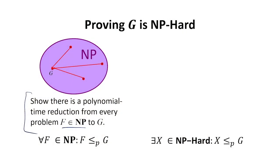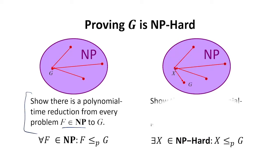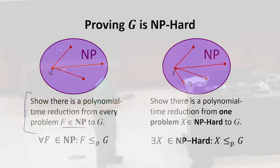The other way to do it is, well now, once we know some problem that's NP-hard, we only have to show one reduction. We have to show that this problem that we're trying to show is NP-hard reduces to it. So that's almost always going to be the way we do it now. Take advantage of the problems that we already know.